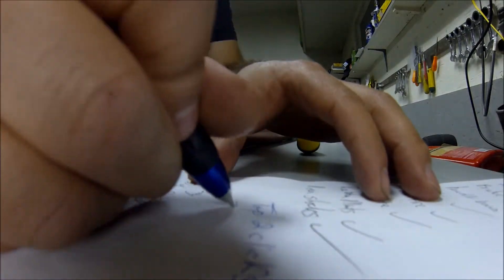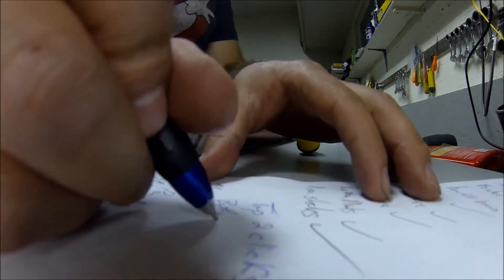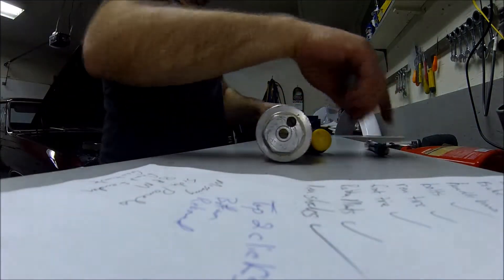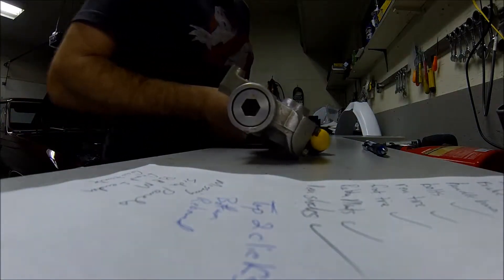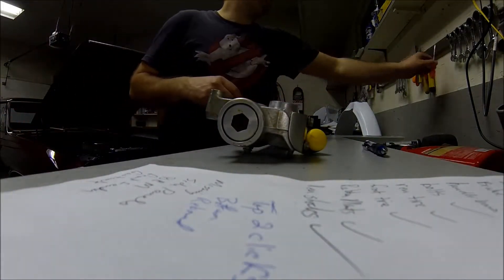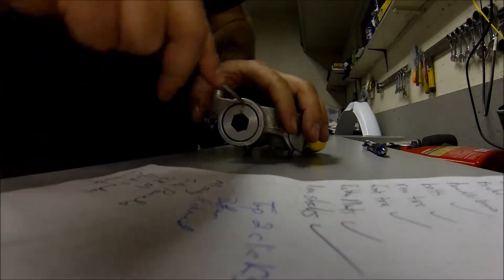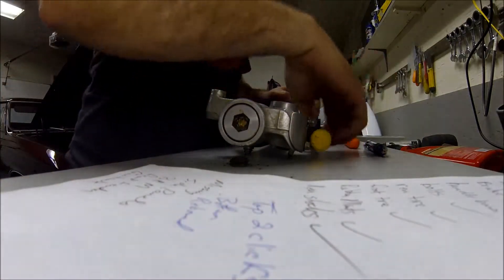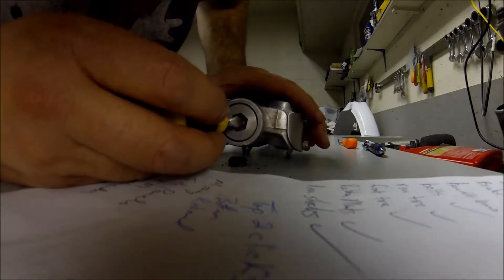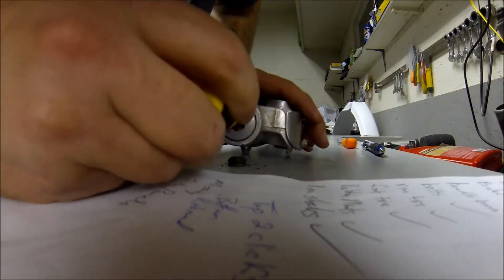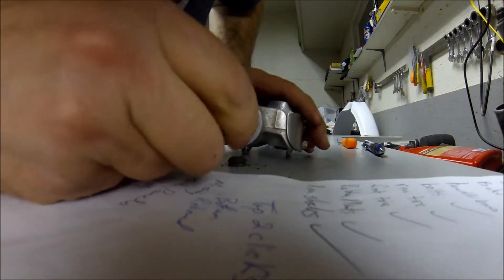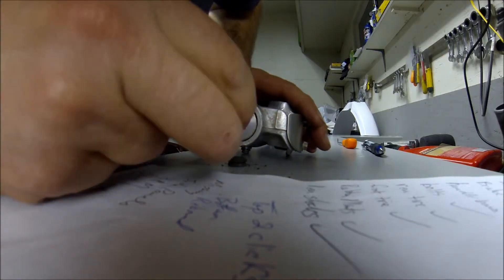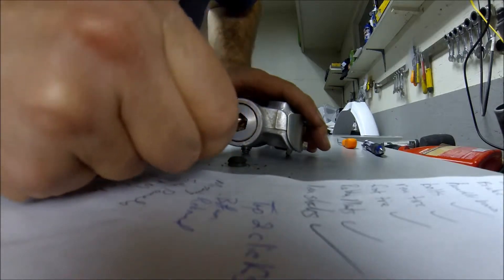On the bottom is your rebound. Same thing, I'm gonna check the clicks going in. One, two, three, four, five, six, seven, eight. That's eight.